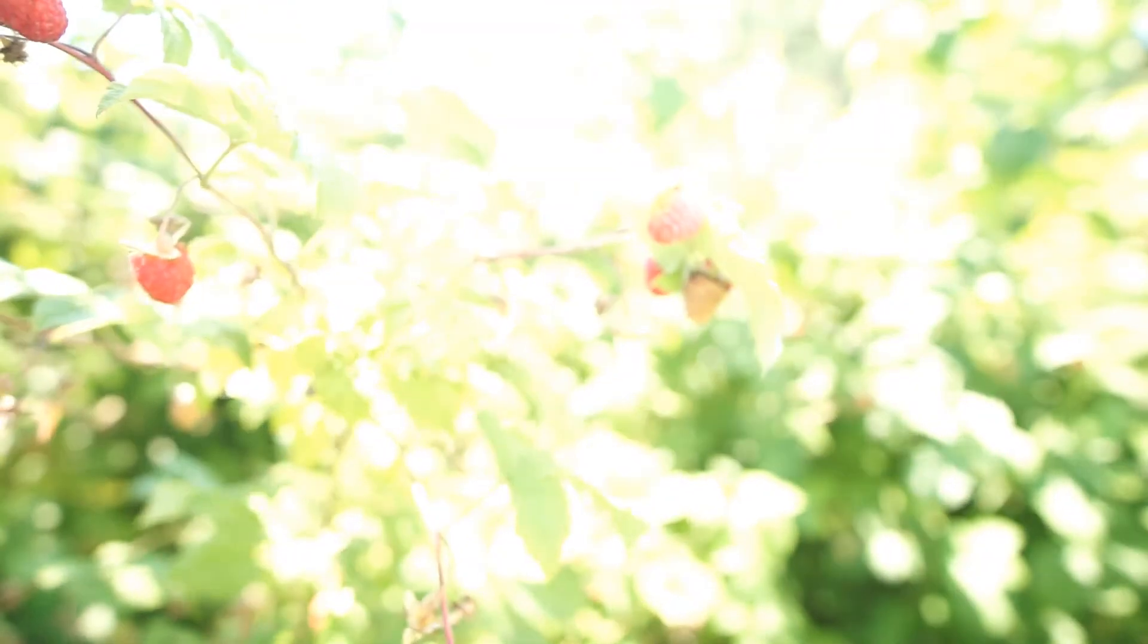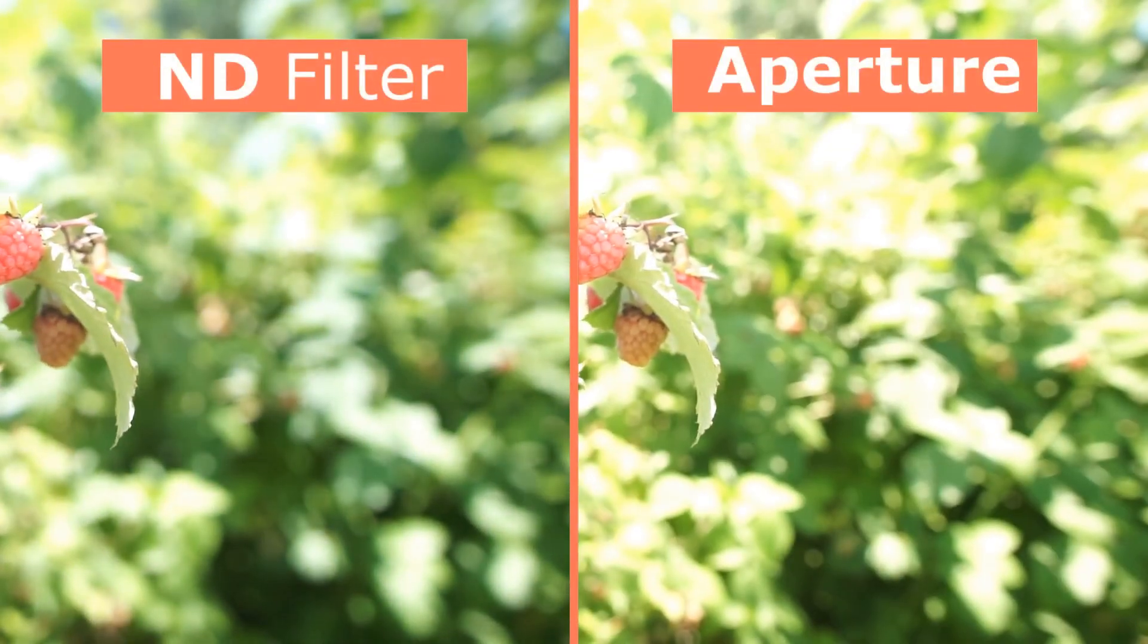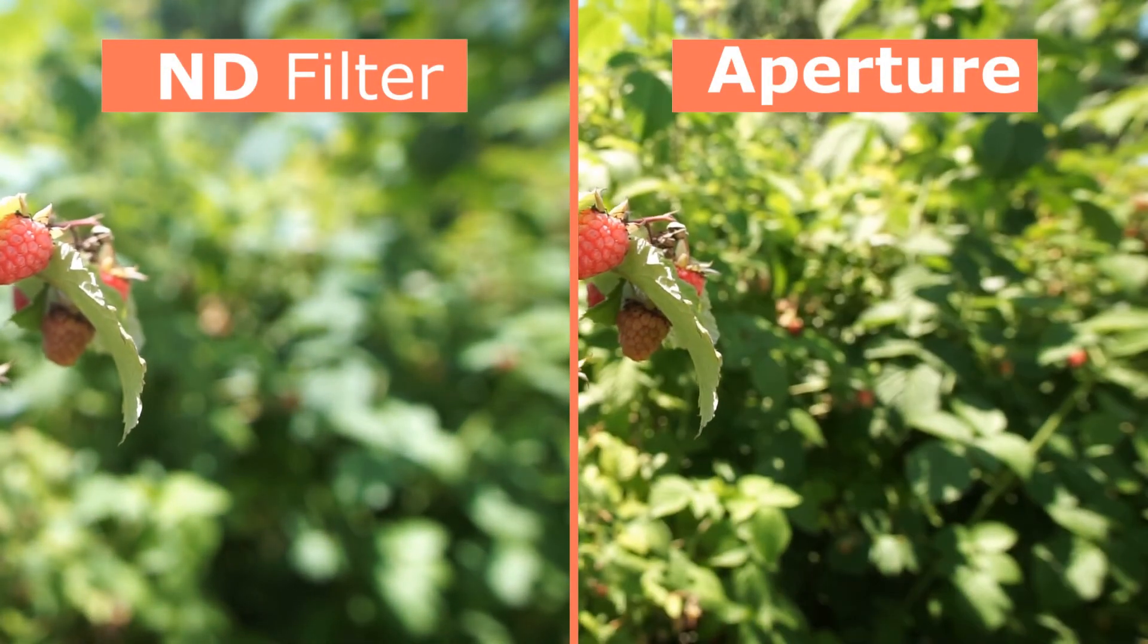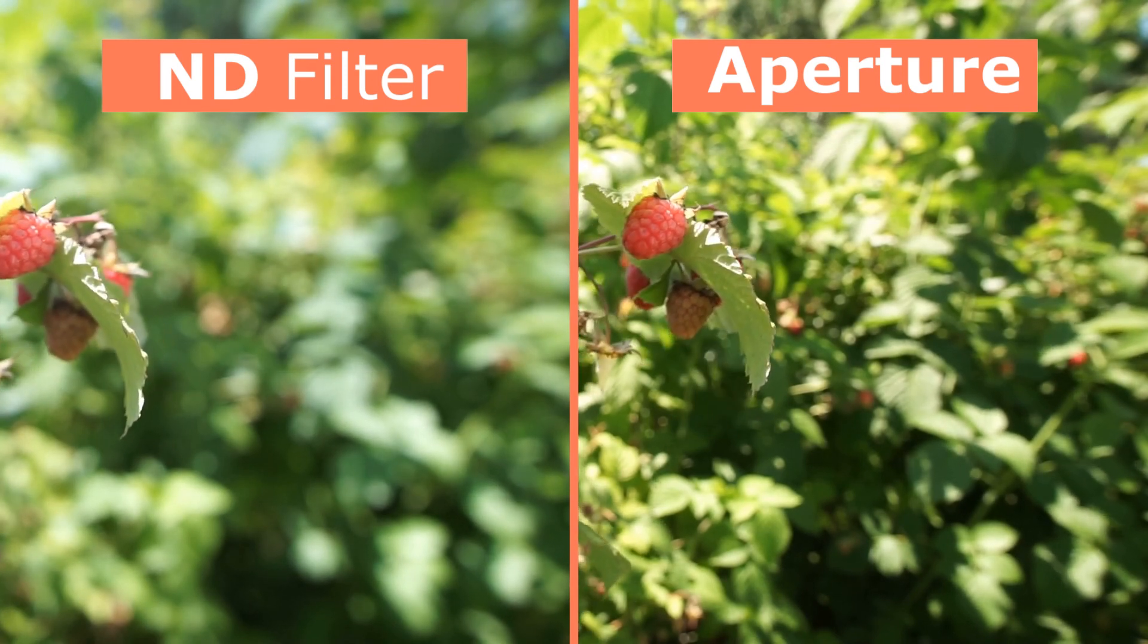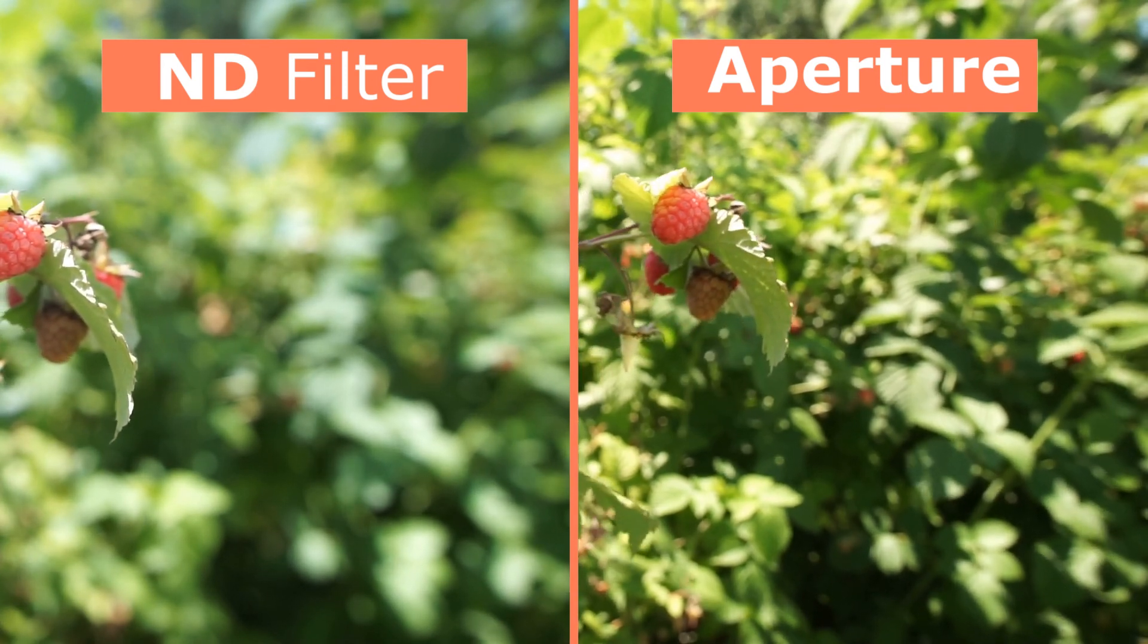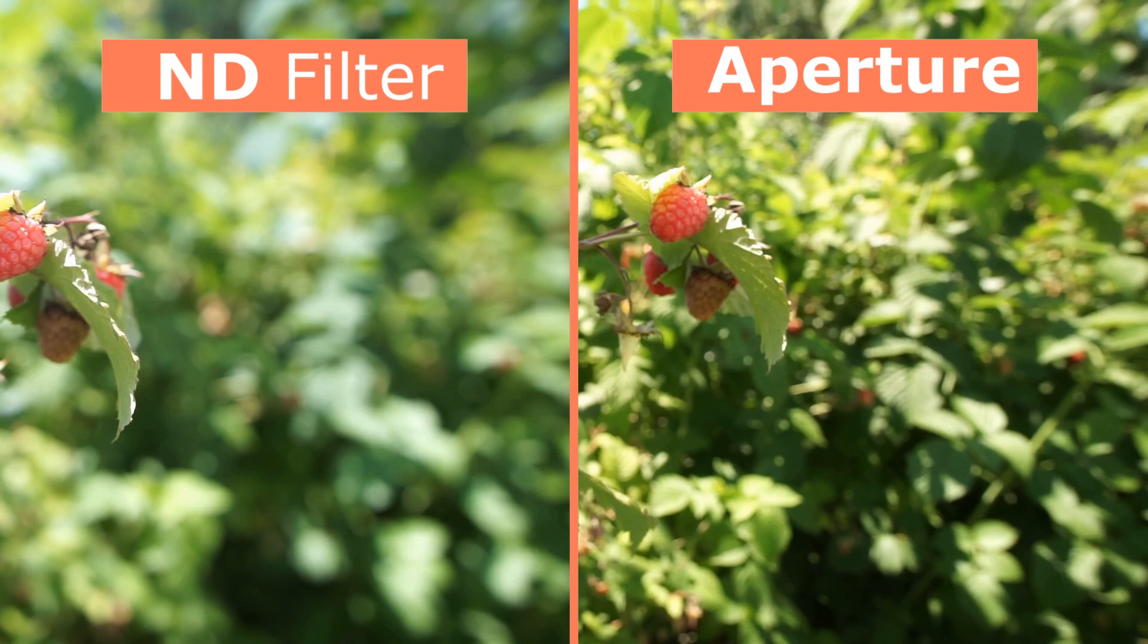And now side by side comparison between ND filter and aperture. As for me footage on the right side is much sharper but in the same time bokeh looks weird in comparison to the footage on the left. And adjustment is noticeably visible because aperture has hard stops.